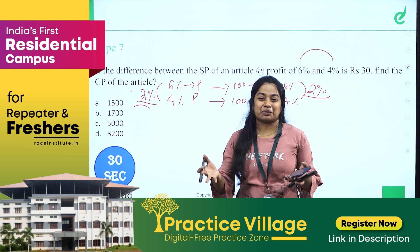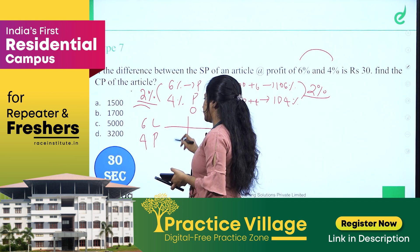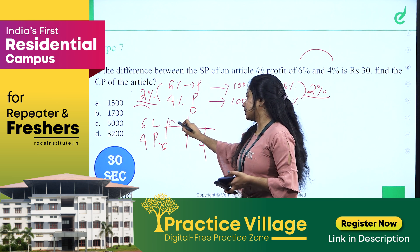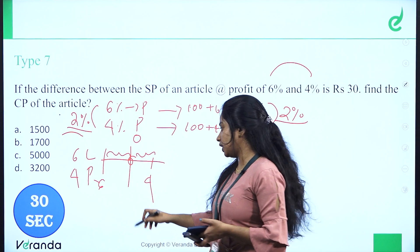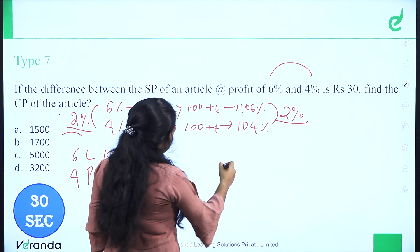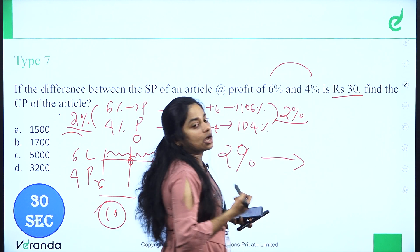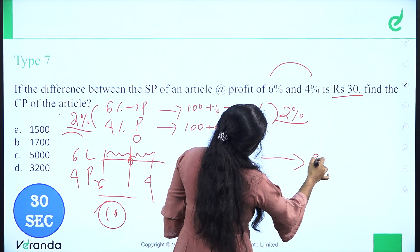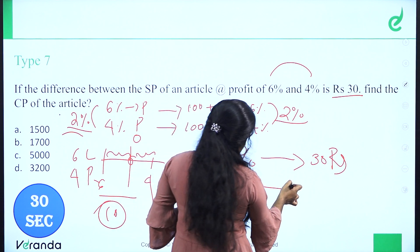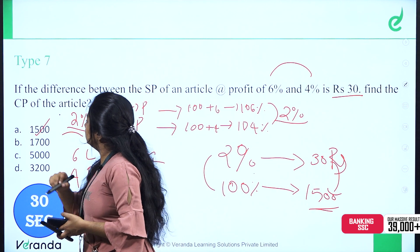This also works when one is a loss and the other is a profit — for example, 6% loss and 4% profit gives a total difference of 10 percentage points. In this question, the 2% difference equals 30 rupees. So 1% equals 15 rupees, and 100% — the cost price — equals 1500 rupees. That is the correct answer.